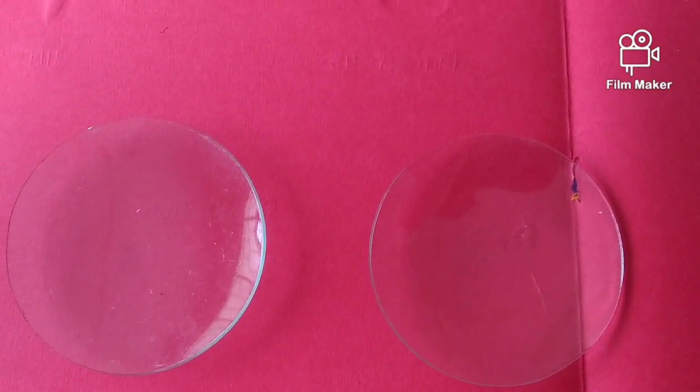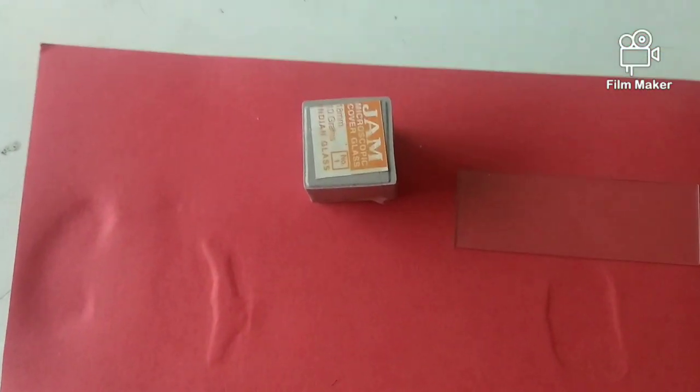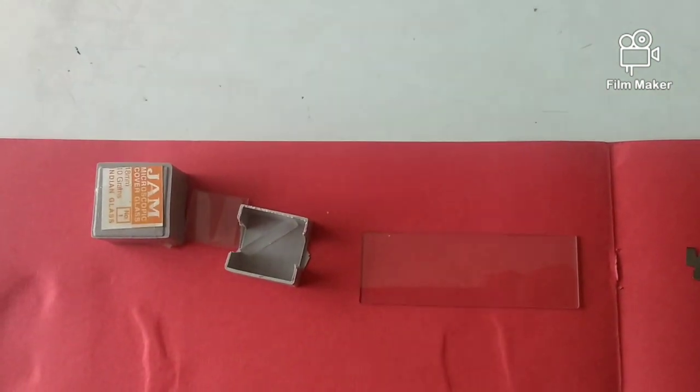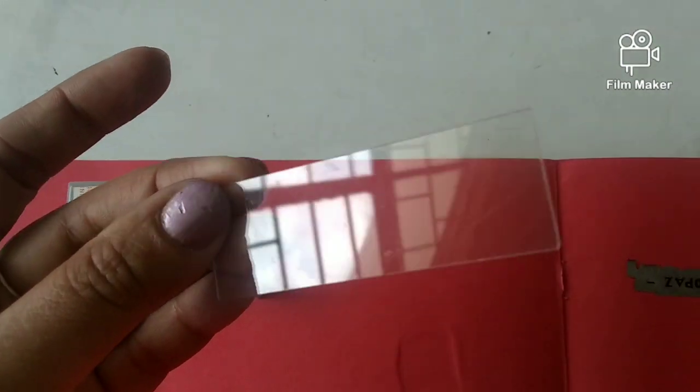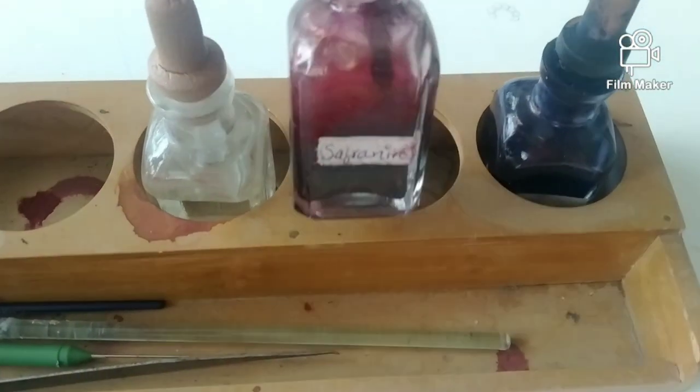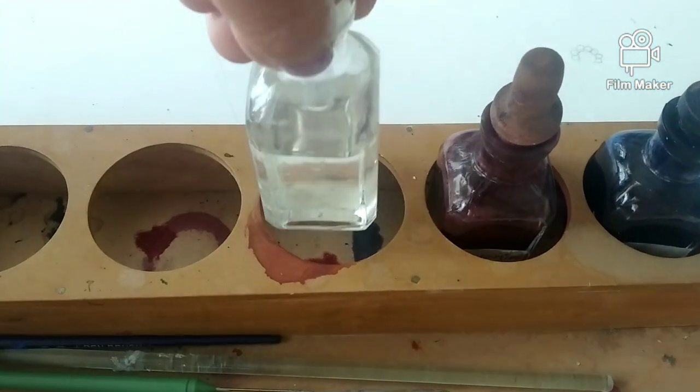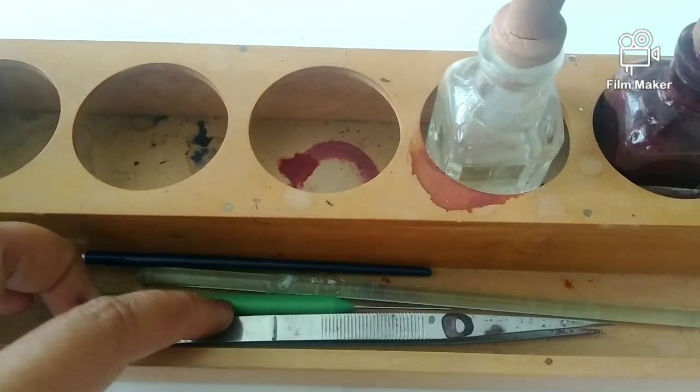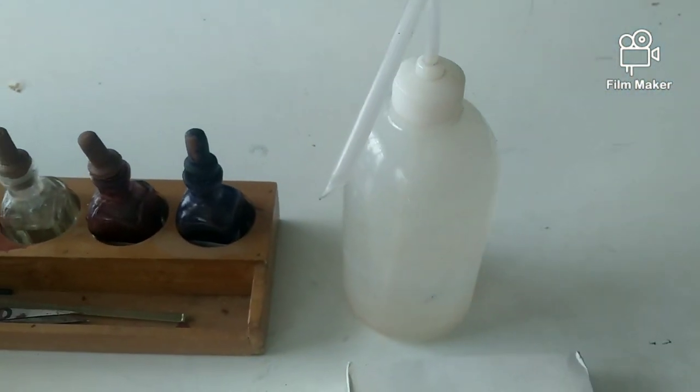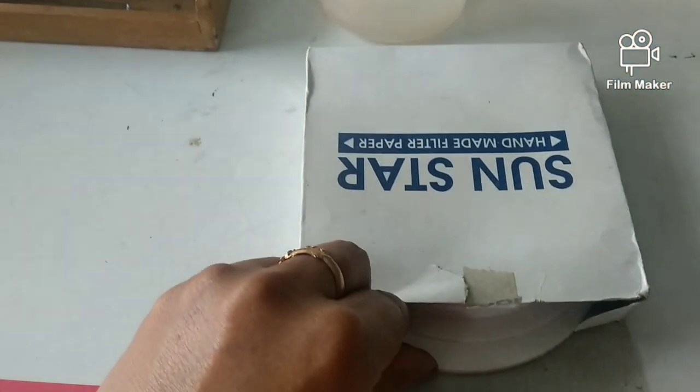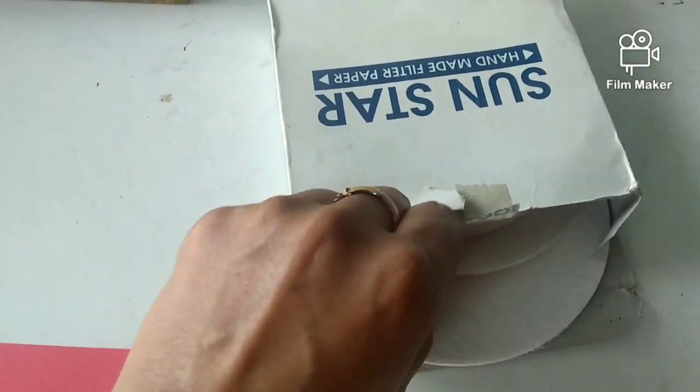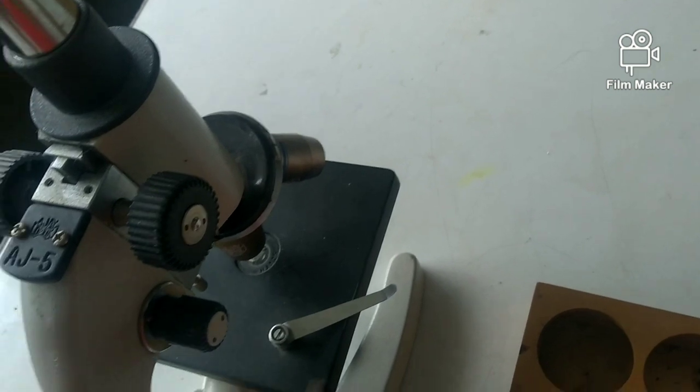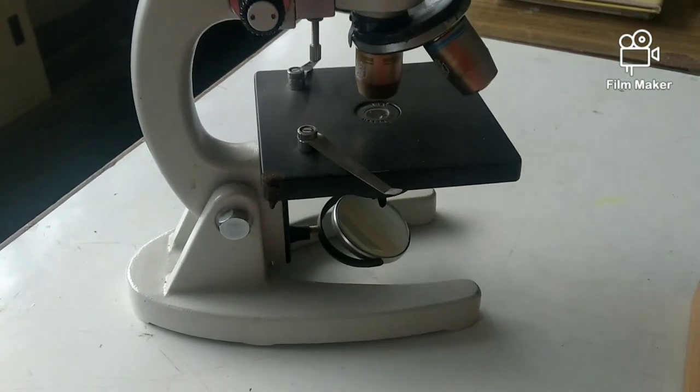These are the watch glass which we need, and this is a cover slip. These are very thin and delicate so we should handle them very carefully. This is a glass slide, safranin dye, glycerin, a transparent liquid, and we also need a brush, needle, forcep, water bottle with water in it, blotting paper, and the most important equipment, the microscope, which will magnify the specimen.